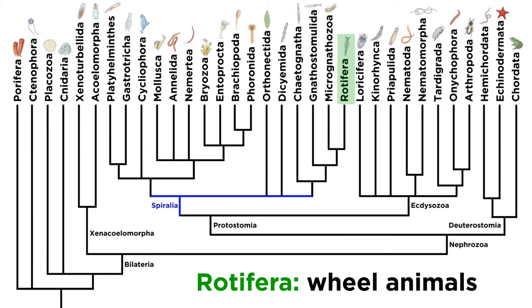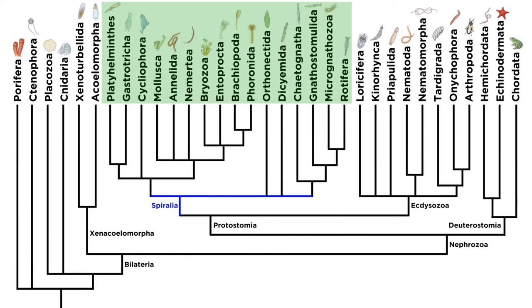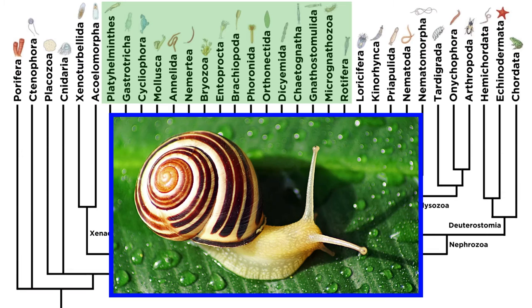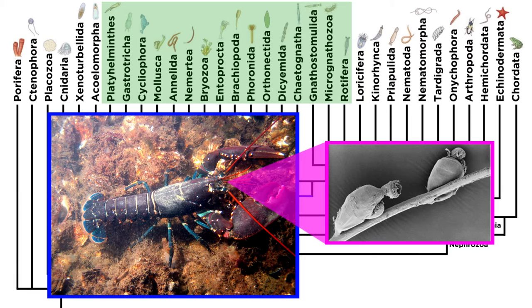However, these are just a few of the numerous spiralian phyla, and as was promised earlier in the series, we will be covering all of them — from the well-known molluscs that are found all over the world, to the sac-like symbionts that make their living on the mouthparts of lobsters.